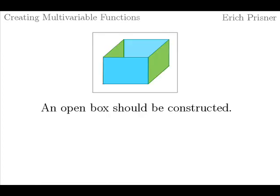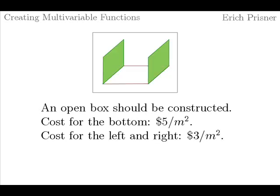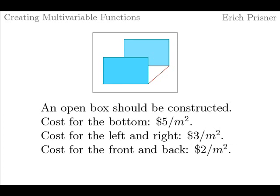We will illustrate the topic with open-box examples. Open or closed boxes are maybe the simplest examples. The version we are considering here goes as follows: An open box should be constructed. The cost for the bottom is $5 per square meter. The cost for the green left and right side is $3 per square meter. The cost for the blue front and back side is $2 per square meter. And there is also a restriction: You have to use $20 for the whole box.